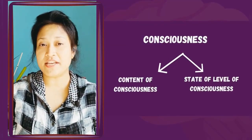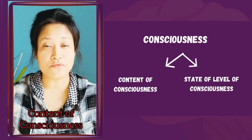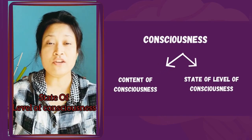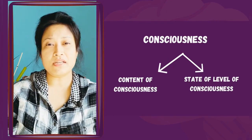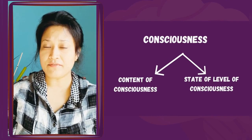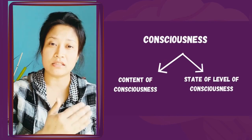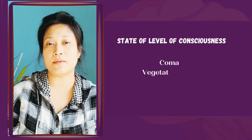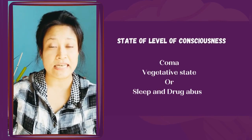Experimental investigations divide consciousness into two parts: content of consciousness and state or level of consciousness. In content of consciousness, the person is awake and responsive but is unaware of themselves, their actions, or their environment — for example, unaware of feeling pain or the taste of their food. State or level of consciousness, on the other hand, is the degree of alertness or arousal, and includes coma, vegetative state, sleep, or drug abuse.